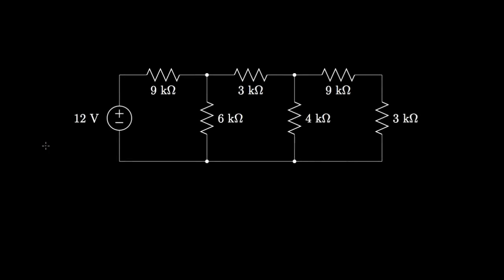For our first example, we have a circuit with a 12-volt voltage source that's connected to a network of six resistors. Let's see if we can use some of the basic principles we've learned to solve for the currents through and equivalently the voltages across each of the resistors.